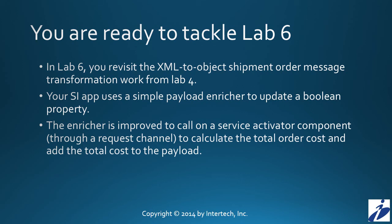With that, I believe you're ready to tackle lab number six. In lab number six, you will revisit some of the transformation work — in particular, the XML to object transformation — turning XML documents into shipment order messages. You'll use enrichers to add data to those messages, including adding a Boolean property indicating the shipment has been accomplished. You'll also create a custom enricher, with the help of a service activator, to add a total order cost to the shipment order object. Good luck with lab number six, and we hope you'll come back for tutorial number seven, which will address service activators — components you've actually used throughout many of the tutorial labs up to this point.